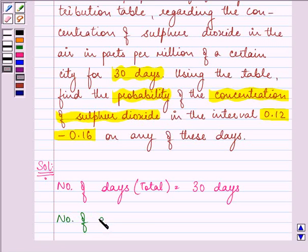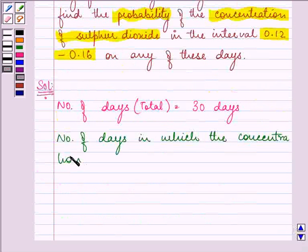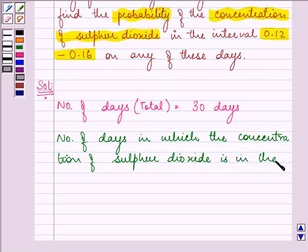number of days in which the concentration of sulfur dioxide is in the interval 0.12 to 0.16 is 2.